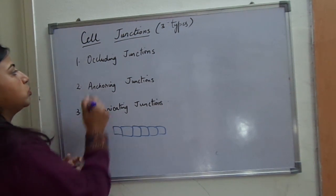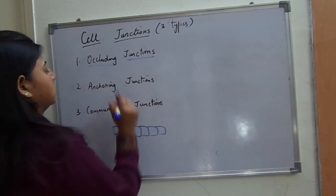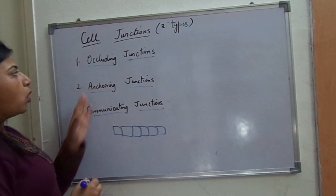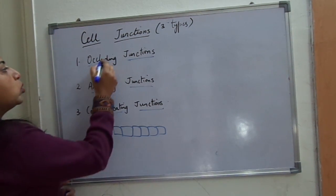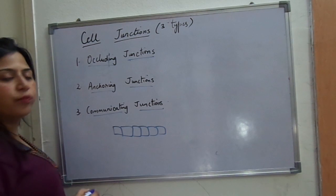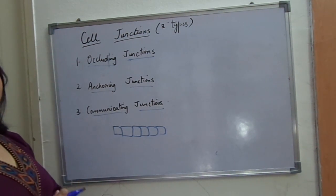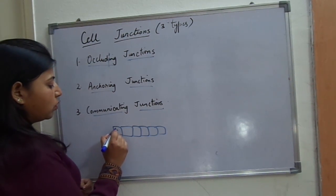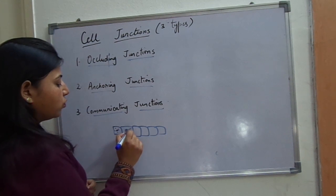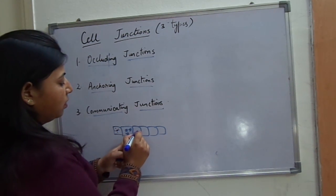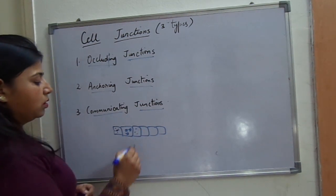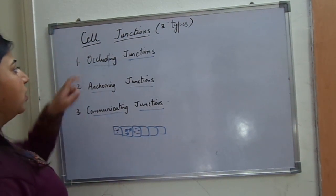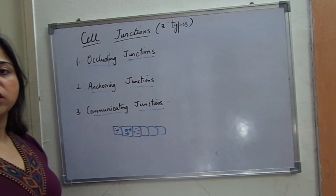There are three types of cell junctions. First one is occluding junctions, second is anchoring junctions, and third one is communicating junctions. Occluding — occlude means to restrict the movement. This type of junction restricts movement between two cells. Whatever material is present in one cell will remain in that cell itself with the help of this junction, known as occluding junction.